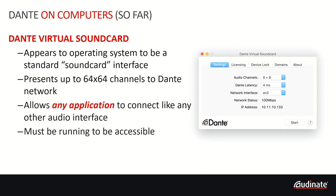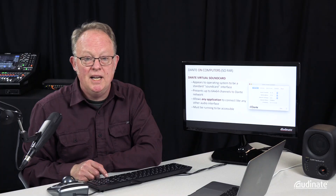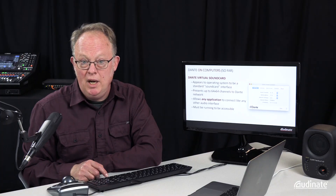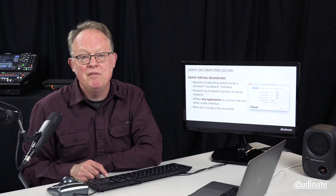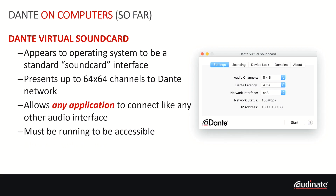Of course, it must be running to be accessible. So if you're running an application you want to use on the Dante network, you have to have them both going. And of course, it's always visible to the user, so the user can go and make changes — whether or not that's a good idea for your application.